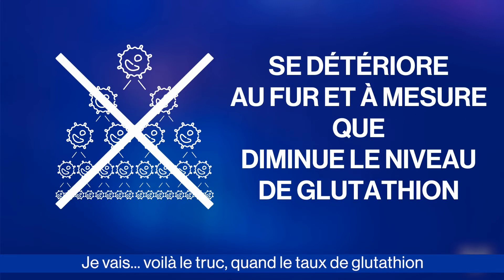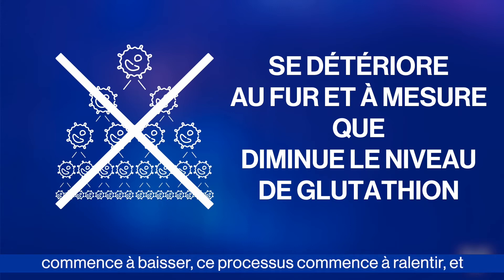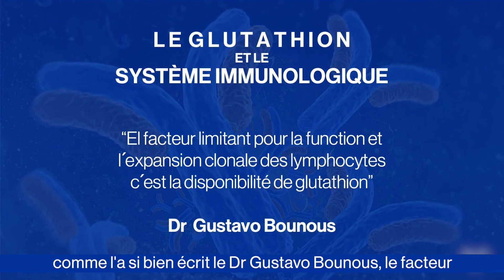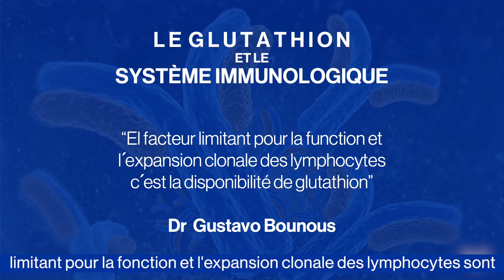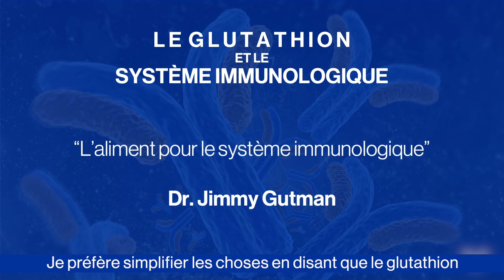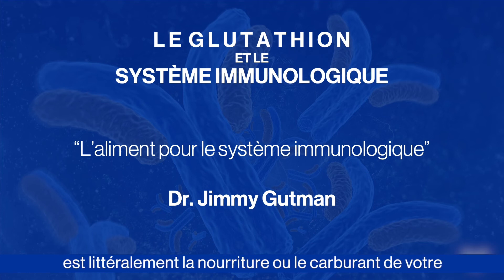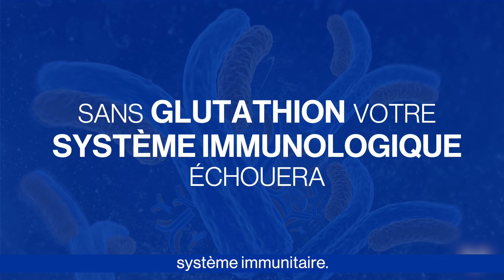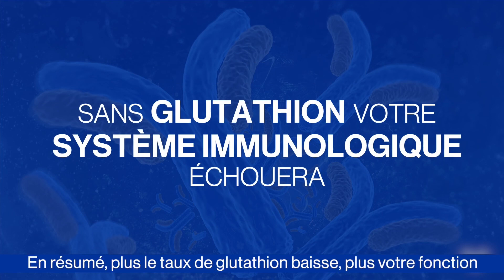But here's the thing: when glutathione levels begin to fall, this process starts to slow down. As Dr. Gustavo Bounous so eloquently wrote, the limiting factor for the function and clonal expansion of lymphocytes — or white blood cells — is their availability of glutathione. I like to put it more simply: think of glutathione literally as food or fuel for your immune system. Bottom line: as glutathione levels fall, so does your immune function.